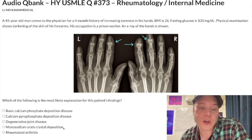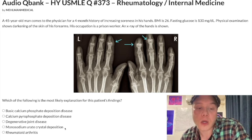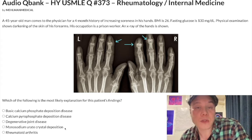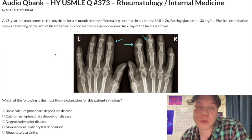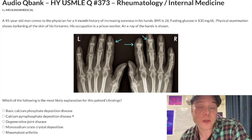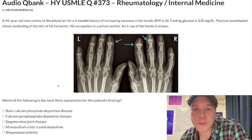For gout chronically, you use xanthine oxidase inhibitors — allopurinol, febuxostat, et cetera. Your take-home: an OA-like picture in a patient with hemochromatosis or primary hyperparathyroidism — the answer is pseudogout, not OA. Subscribe to my channel if you like the content, and I appreciate your time.